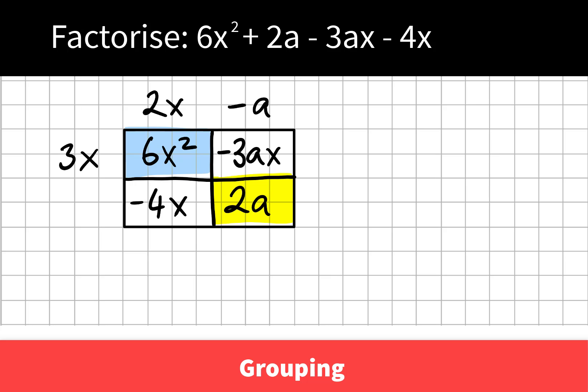We have a few choices how to find the last term. We could look at the highest common factor of the row, or we could say negative a by what gives me 2a, or 2x by what gives us negative 4x. We can see that we're correct whichever way we do it.